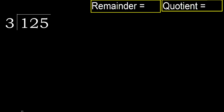125 divided by 3. 1 is less, therefore next. 12 is not less, therefore work with 12. 3 multiplied by which number is nearest to 12 but not greater? 3 multiplied by 5 is greater.